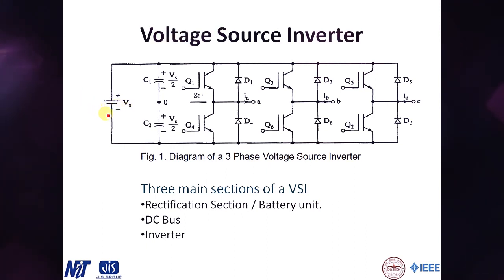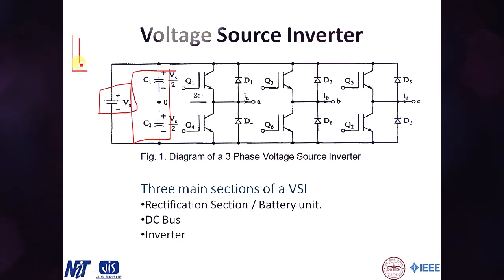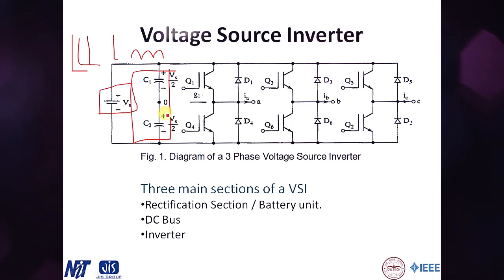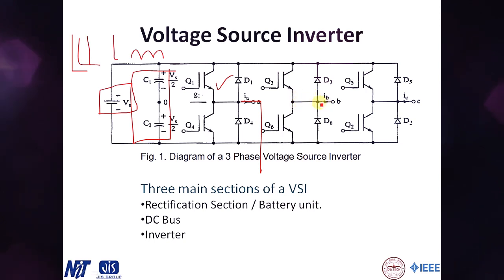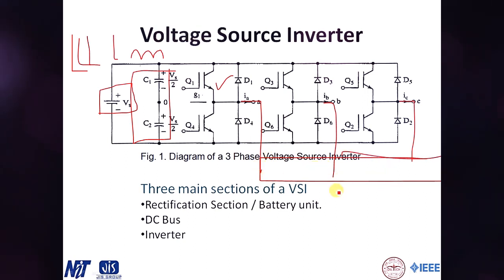This is what a voltage source inverter looks like. There are three sections: the DC battery or rectification section, a filtering section, and the switching section. After rectification we get a pulsating DC, so a filter capacitor converts it to linear DC. Finally, six IGBTs switch at different instants of time to produce a three-phase AC output on lines one, two, and three, which is used for driving motors or other purposes.